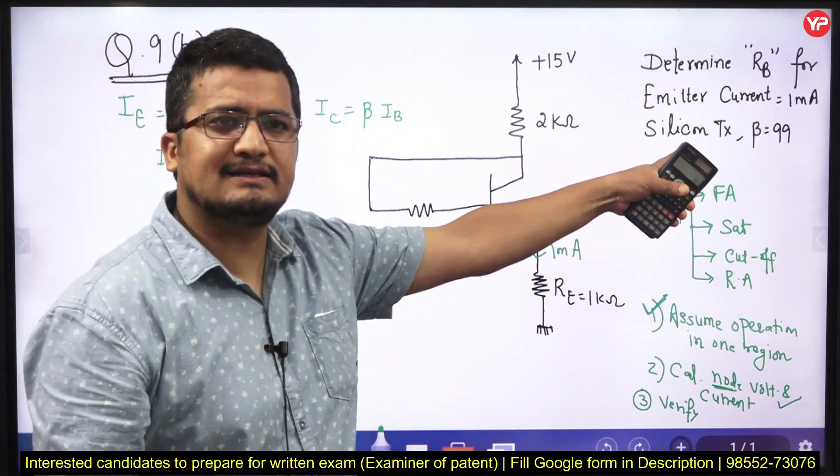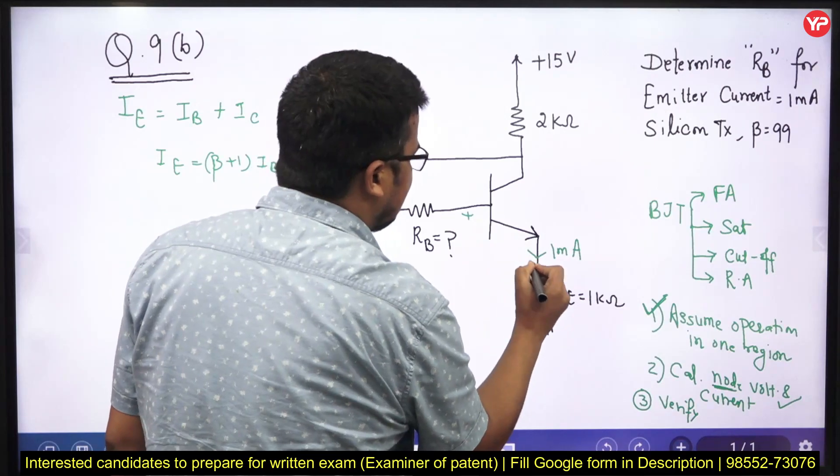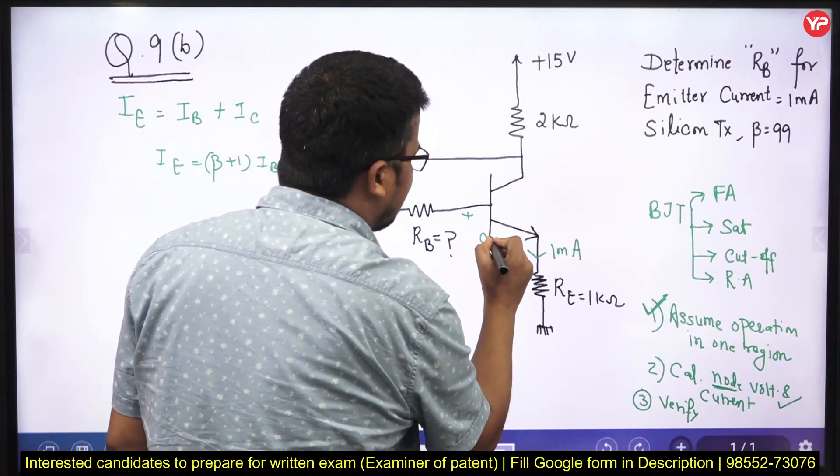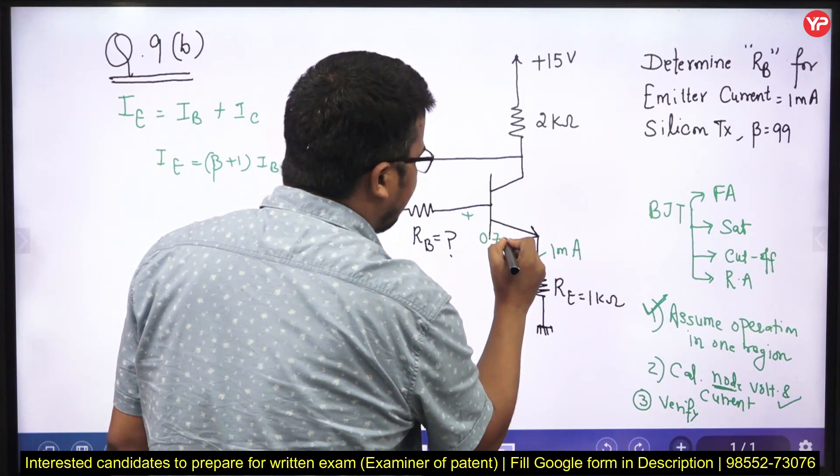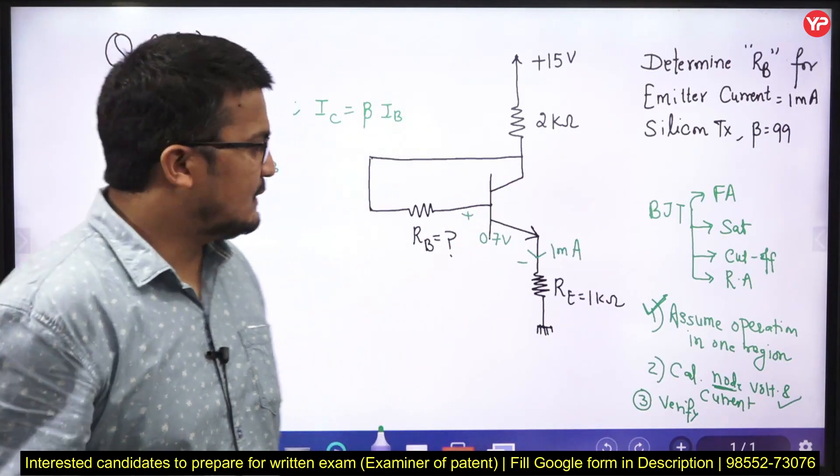And since this is a silicon transistor, if this is a silicon transistor, unless or until not mentioned, you can take the ON voltage at 0.7V typical value. If it is germanium, then 0.2, 0.3 if nothing mentioned.